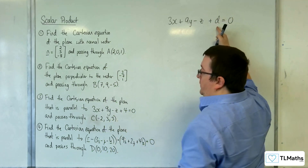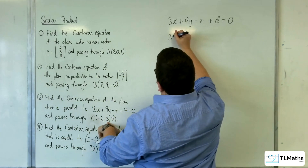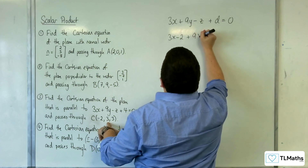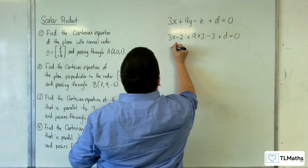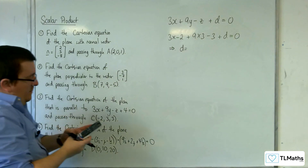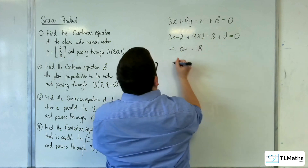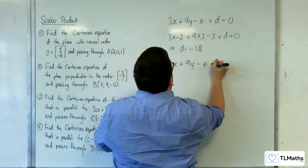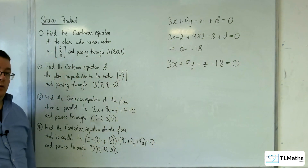We just need to work out the value of d. We know the plane goes through (-2, 3, 3), so substituting in: 3×(-2) plus 9×3 minus 3 plus d equals 0. So we get minus 6 plus 27 minus 3, which is 18, so d equals minus 18. Therefore 3x plus 9y minus z minus 18 equals 0, and that's the Cartesian equation we're looking for.